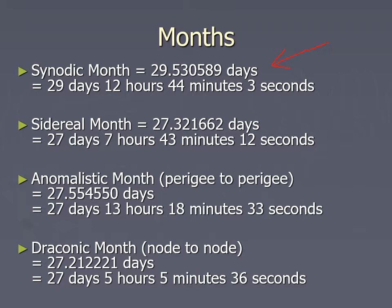This is new moon to new moon, or full moon to full moon — it averages about 29 and a half days. The sidereal month is how long it actually takes to orbit the Earth, to think of it that way.